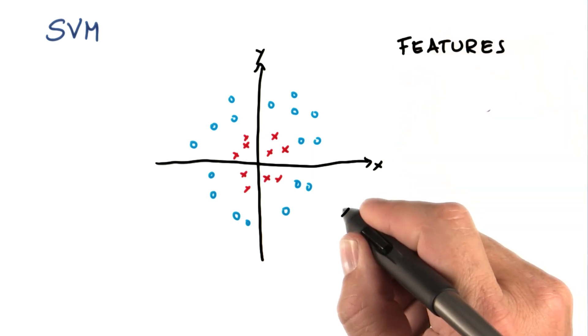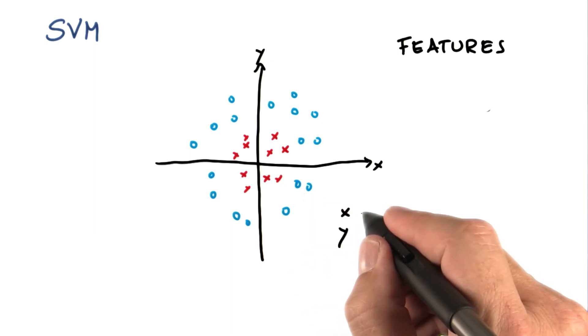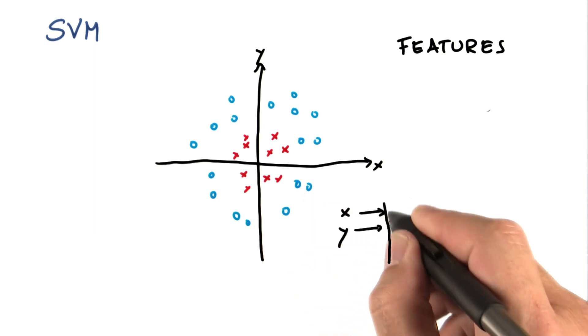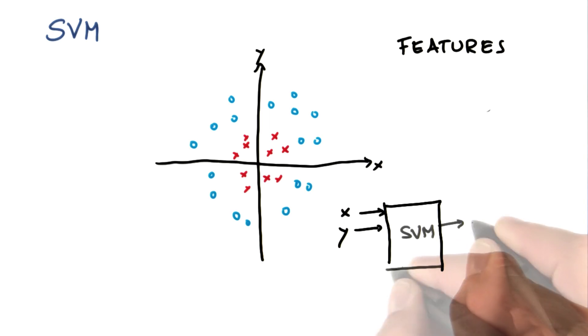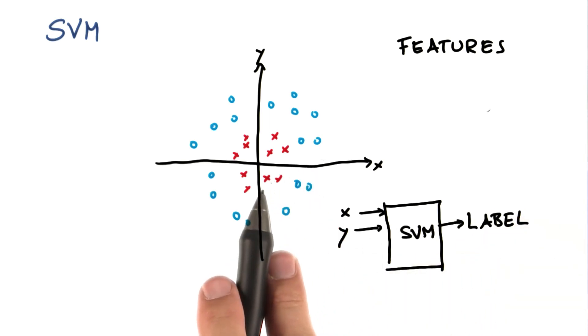So far we assumed that we input our data features x and y into this magic black box called support vector machine. And out comes a label, where a label is either a blue circle or a red x.